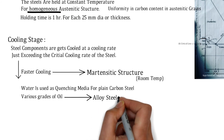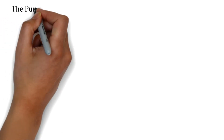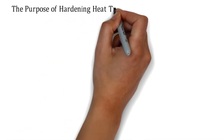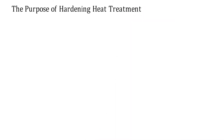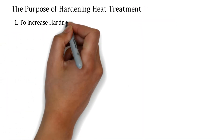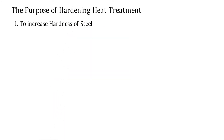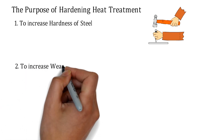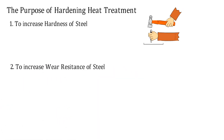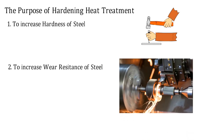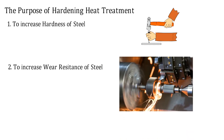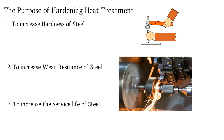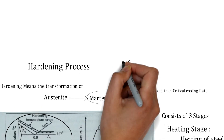The main purposes of the hardening heat treatment are: first, to increase the hardness of steel — hardness being the resistance to penetration; second, to increase the wear resistance of the steel; and third, to increase the service life of the steel.